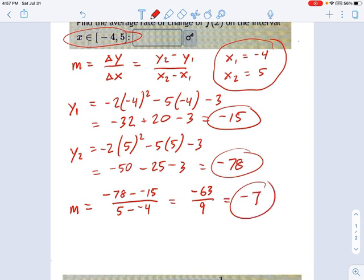It won't always be a nice round number, but sometimes it is. So that is our final answer. We would say the slope equals negative 7.